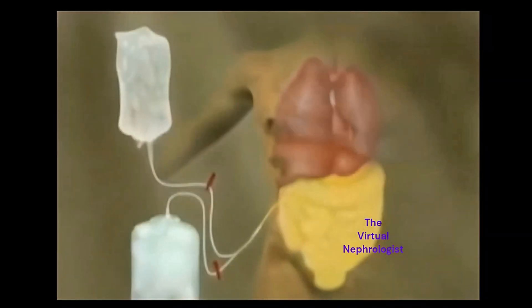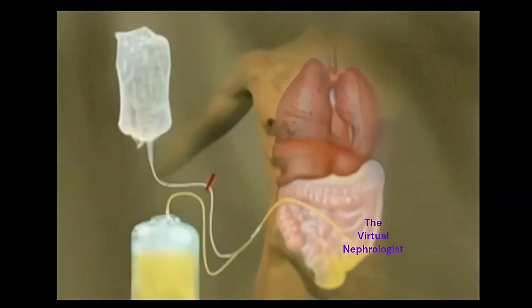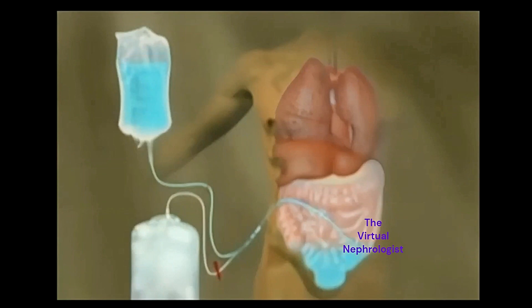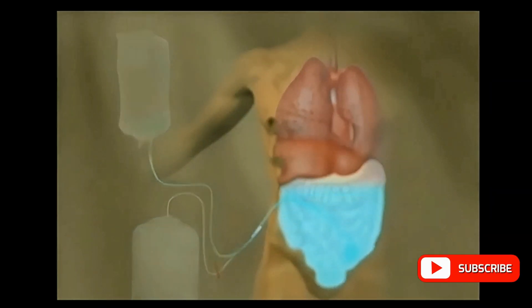After a certain period of time, the fluid is drained through the PD catheter and out of the peritoneal cavity. The used solution, which contains waste and excess fluids — the yellow solution — is then replaced with fresh solution. You then disconnect and discard the bag, and go on with your day. To learn more about peritoneal dialysis, visit our website at thevirtualnephrologist.com.